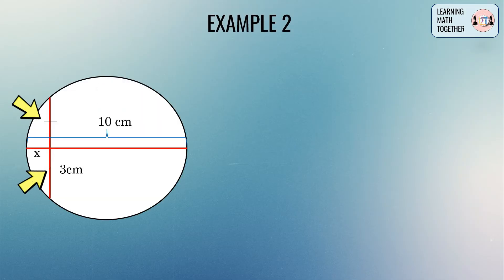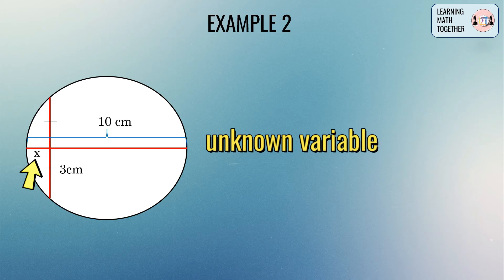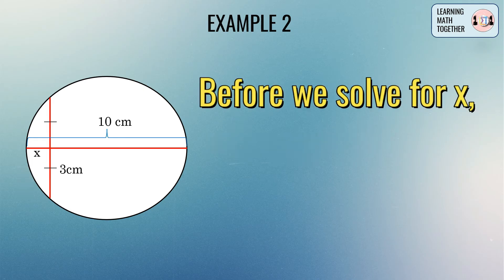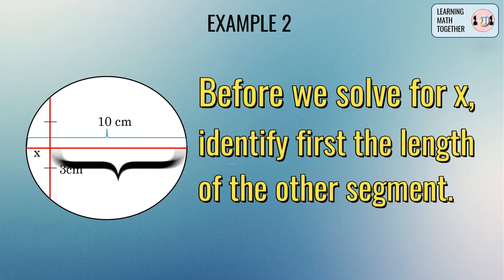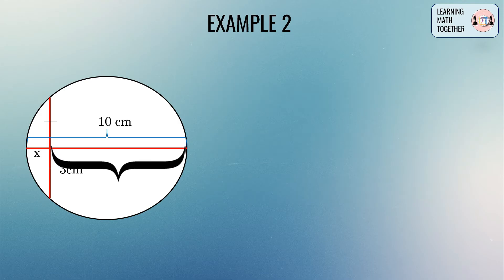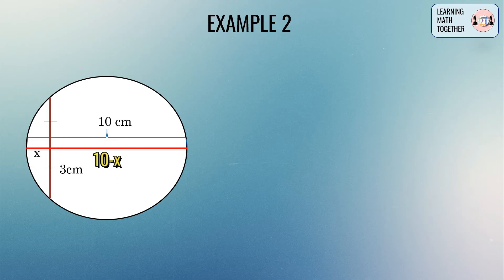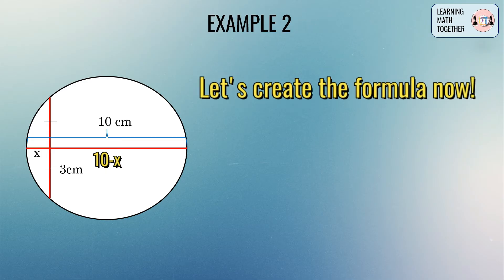Now for example number 2, we have a new figure. There is a mark indicating two segments have equal lengths of 3 centimeters. For the other chord, the whole chord is equal to 10 centimeters and one segment is x. The other segment is therefore 10 minus x centimeters.